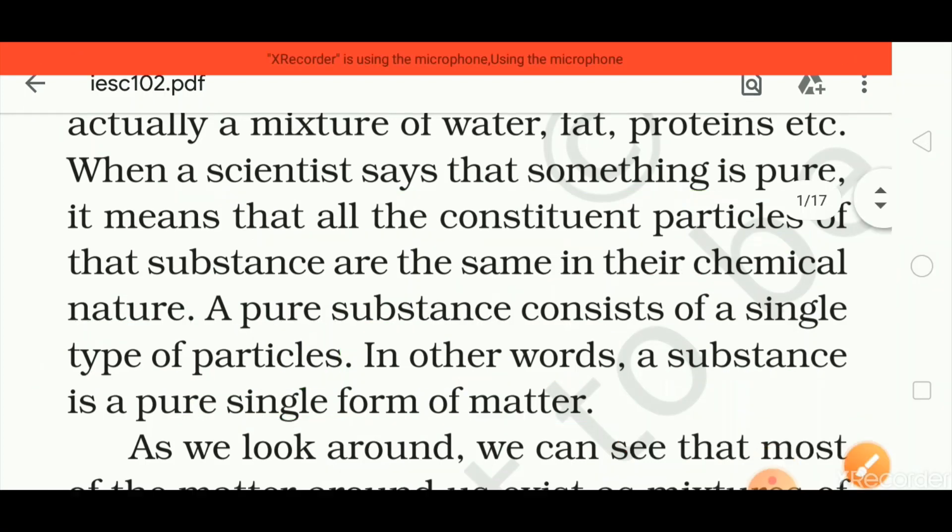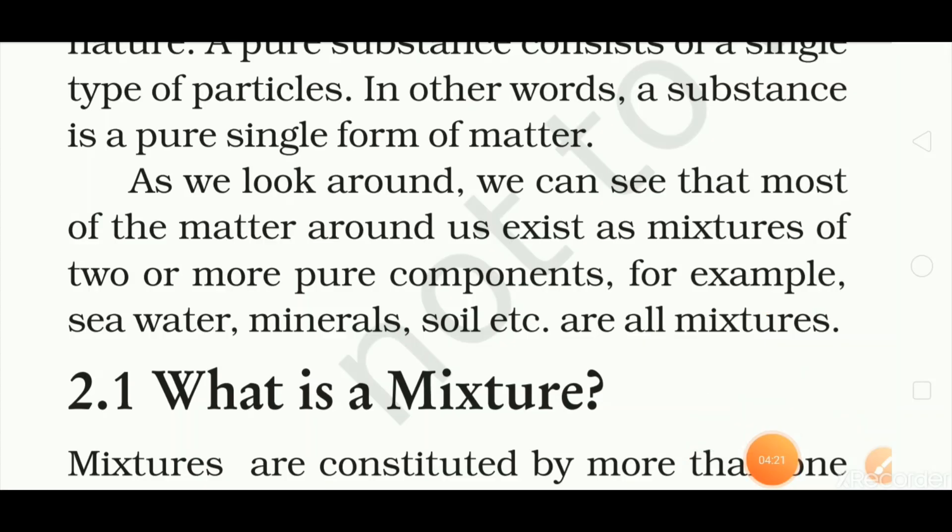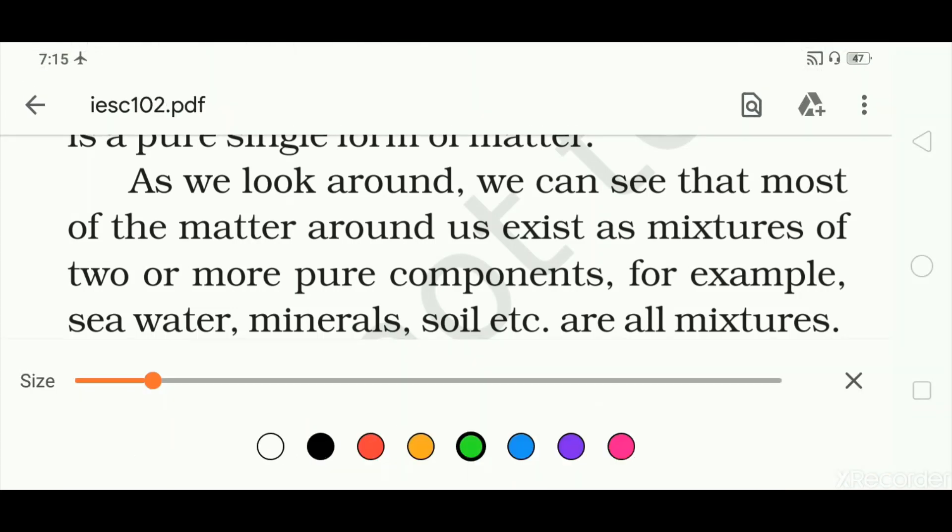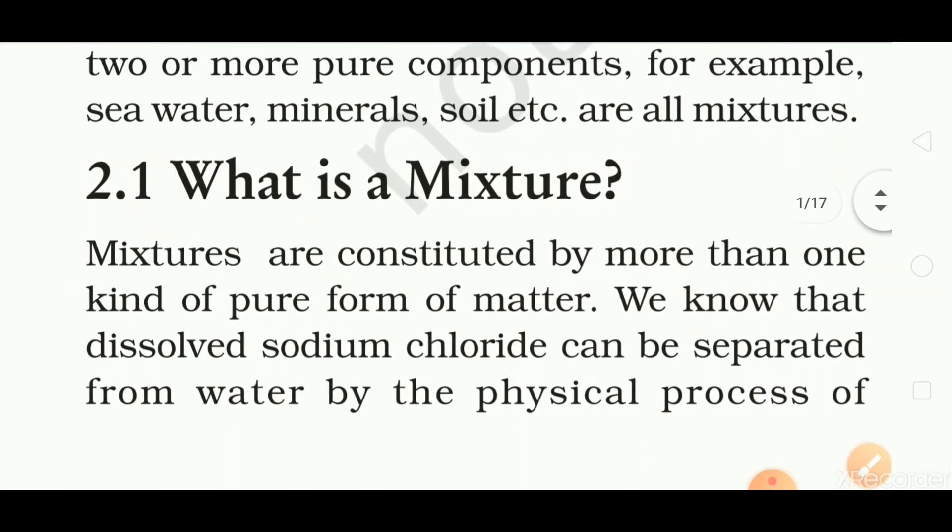A pure substance consists of a single type of particle. In other words, a substance is a pure single form of matter. As we look around, we see that most of the matter around us exists as a mixture of two or more components. For example, seawater, minerals, soil.